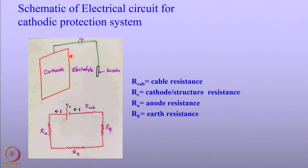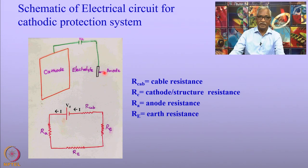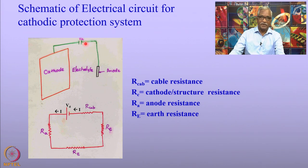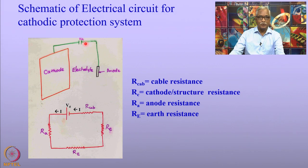Before we discuss stray current corrosion, let us go back to cathodic protection in general. What is shown in this diagram is a schematic of cathodic protection of a structure involving an anode and a cathode, and of course a DC source — a rectifier. I have used a rectifier here because stray current corrosion mostly occurs when structures are protected using an impressed current cathodic protection system.